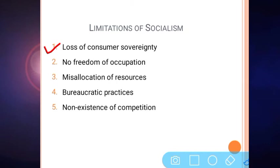With changing customer demand, manufacturers also change their production. However, the same scenario is not there in socialism. In socialism, consumers are not allowed to make their demand in the market. They have to purchase whatever is produced by companies, and those companies are highly controlled by the government. The government decides what to produce, when to produce, how to produce, for whom to produce, and in what quantity. So the basic economic problems are already decided by the government, and hence there is no scope for innovation regarding customers' needs.